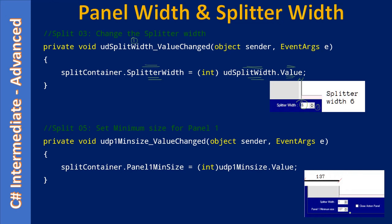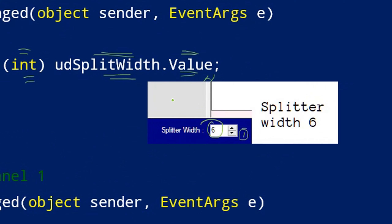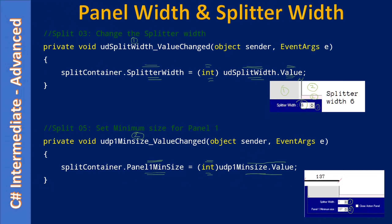Next we have one more NumericUpDown control. This is the second control, and once again we are implementing the ValueChanged event. We access the value property of the NumericUpDown control and convert it to integer. The property here is Panel1MinimumSize. The same way you can access Panel2MinimumSize also, but here we are accessing Panel1MinimumSize. Panel 1 is on the left side, and the list box sitting in panel 2 occupies the entire panel 2.